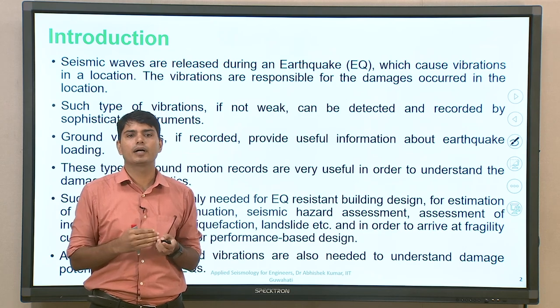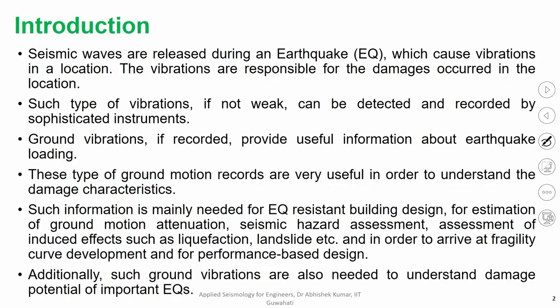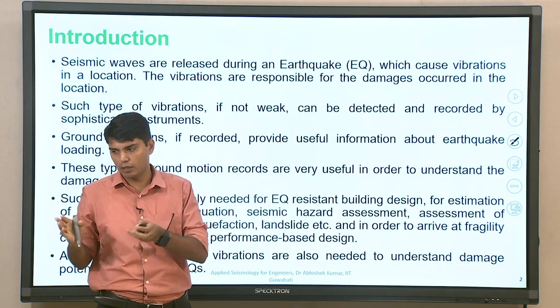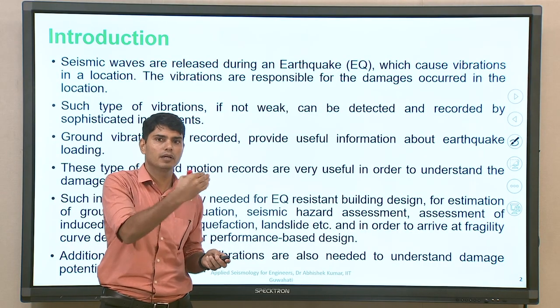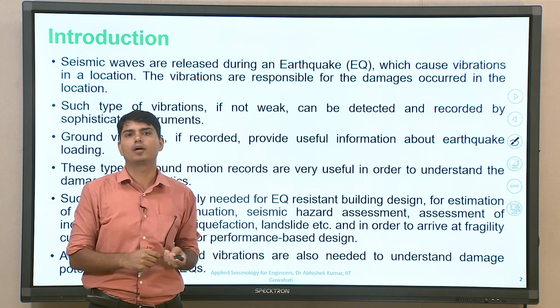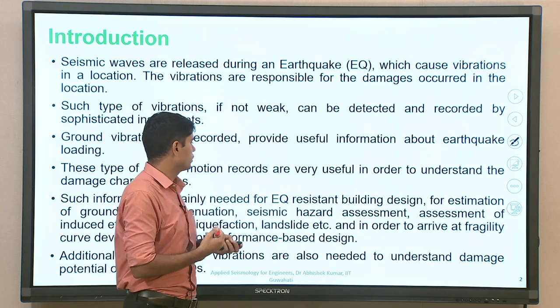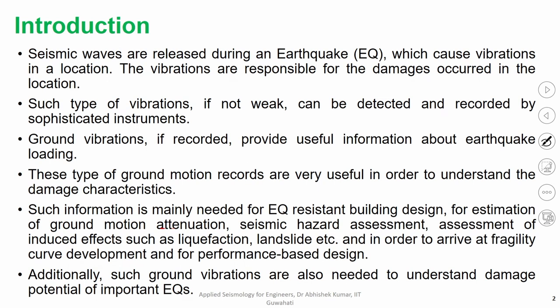Such information is primarily required for earthquake resistant design and for estimation of ground motion attenuation — how ground vibration is reducing primarily in terms of amplitude of different frequency waves as it covers a particular physical medium. It can happen along the propagation path, and it can also happen between bedrock and the ground surface.